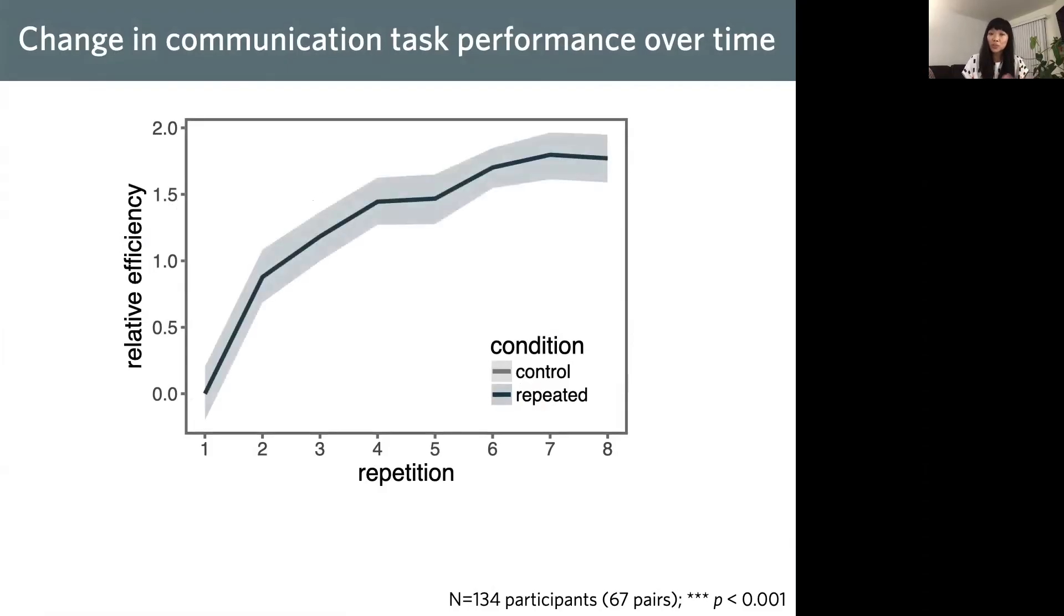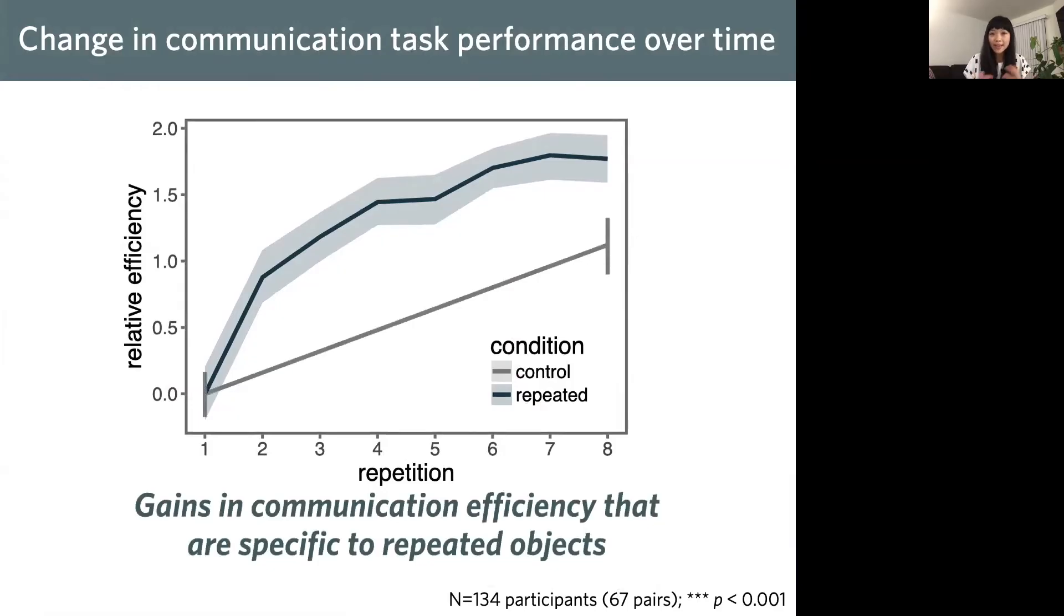What we found were highly consistent gains in efficiency for the repeated objects. This slope was highly positive, meaning later trials were substantially faster and more accurate. But we wondered whether this might just be a practice effect, whether these gains meant that participants were mostly just getting used to the interface. So we also examined the change in efficiency for the control objects and found that, yes, while participants did generally get better at the task, the improvement is consistently greater for the repeated objects, suggesting the benefits of repeated communication was partly specific to those objects they drew a lot.